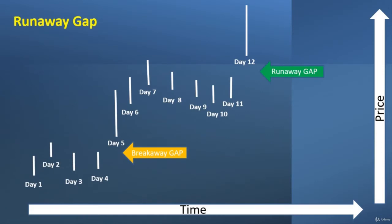Looking at our example here, you can see how over this time period there was a breakaway gap that started a new trend — in this case, an uptrend. Then there's a little sideways movement, and then we have a gap between days 11 and 12 — that would be a runaway gap. You can see it's continuing more of that previous trend, which is why it wouldn't be a true breakaway gap. It's continuing the trend, and that's what makes it a runaway gap — a real strong indicator of that trend continuation.